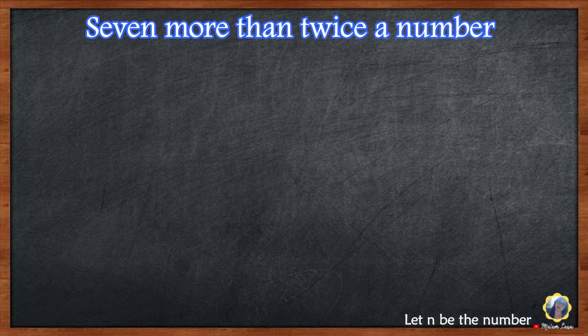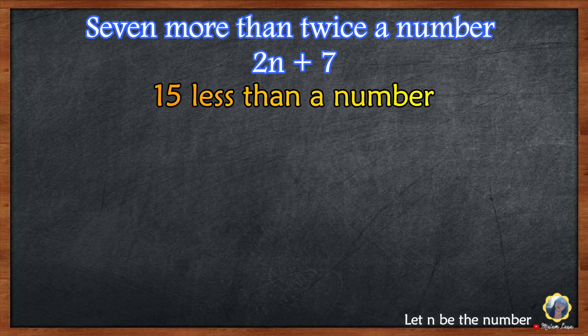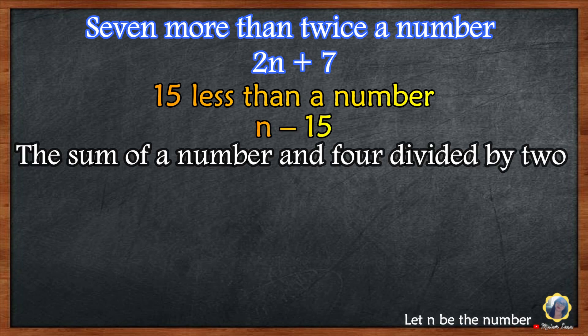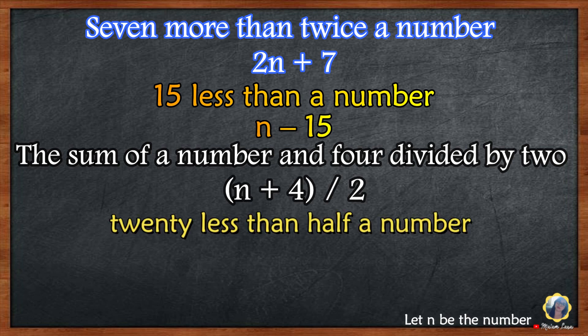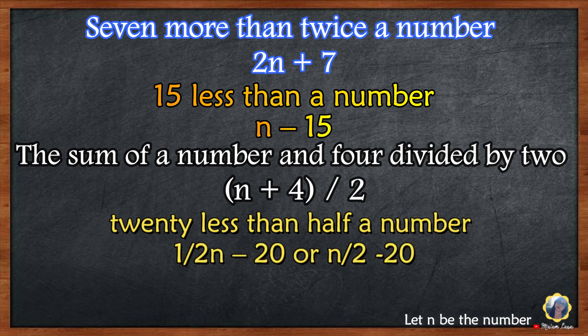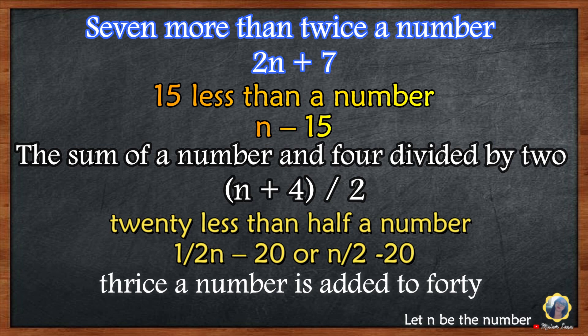Let's practice translating to algebraic expressions. Let N be the number. Translate the following: 7 more than twice a number; 15 less than a number; the sum of a number N and 4, divided by 2; 20 less than half a number; and thrice a number added to 40.